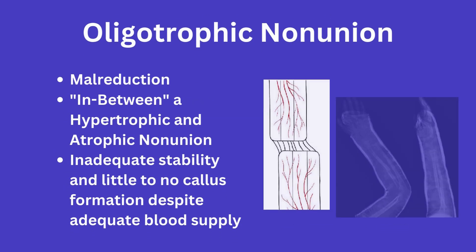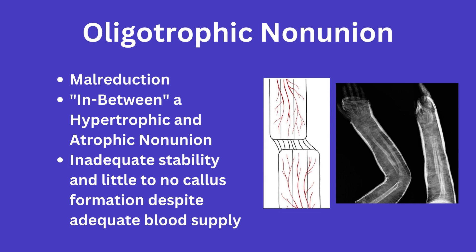Next is the oligotrophic non-union. According to online resources, you will see this defined as inadequate reduction. However, most orthopedic surgeons and literature describe it more as a combination of atrophic and hypertrophic non-union, in that there is inadequate fixation or too much mobility at the fracture site, but there is incomplete callus formation, thus mimicking hypertrophic and atrophic non-unions respectively. This type is corrected by obtaining correct reduction with a revision procedure to correct length, alignment, and rotation, while also using biological stimulants as needed.